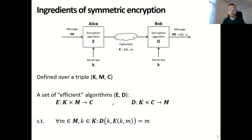Let me start by briefly refreshing your memory on the basics of symmetric encryption. A symmetric cipher is a pair of functions E and D, defined over the triple K, M, and C. E is the encryption algorithm, D is the decryption algorithm, K is the key space, M the message space, and C the ciphertext space. The encryption algorithm E takes as input the message M and the secret key K and transforms it into a ciphertext C.